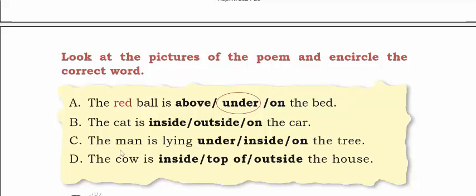Now let's see the next one. The man is lying dash the tree. Can it be on the tree? No, because he can't sit on top of the tree. Can it be inside the tree? No, it can't be inside the tree. So the man is lying under the tree. The cow is dash the house — inside the house, on top of the house, or outside the house? Can the cow be inside? No. On top? No. So the cow is outside the house.